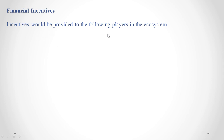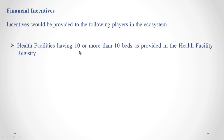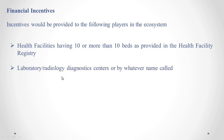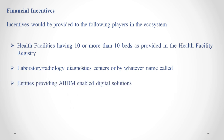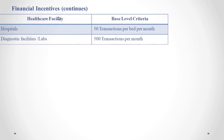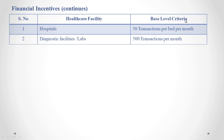Incentives would be provided to the following players in the ecosystem: health facilities having 10 or more beds as provided in the health facility registry. Remember, beds would need to be more than 10 — if nine or six, they are not eligible. Also eligible are laboratory, radiology, diagnostic centers, or by whatever name called, entities providing ABDM-enabled digital solutions. The base level criteria for hospitals is 50 transactions per bed per month, and for diagnostic or lab facilities it is 500 transactions per month. Transactions would need to be above this threshold for a facility to be eligible for incentives.